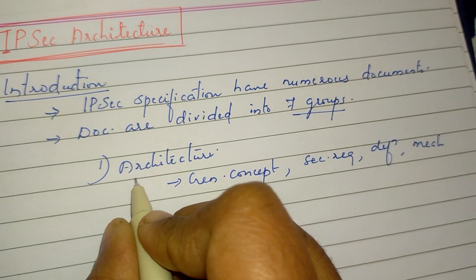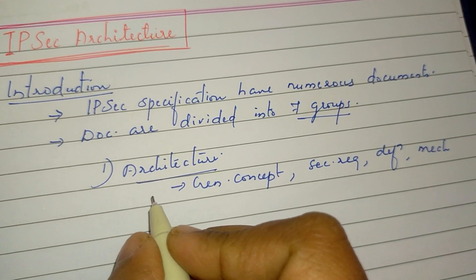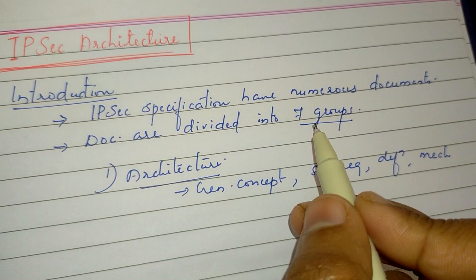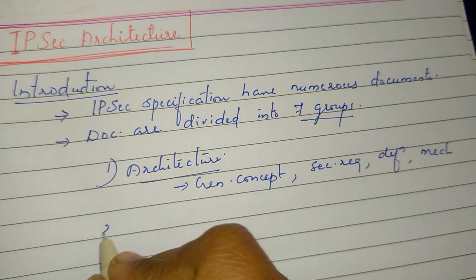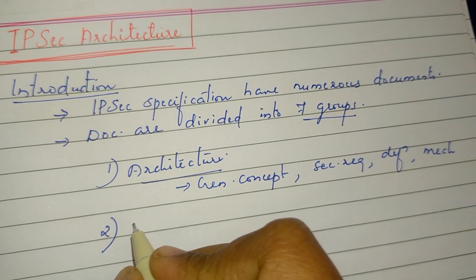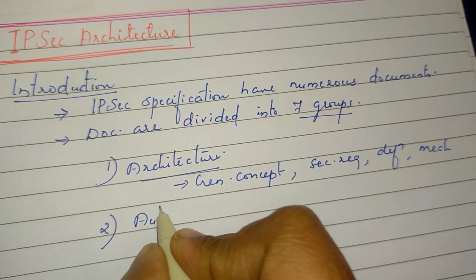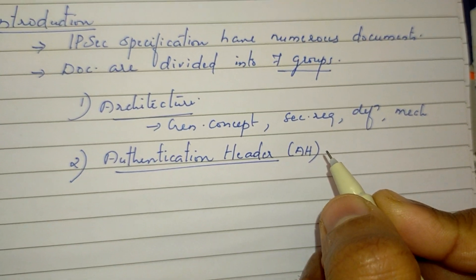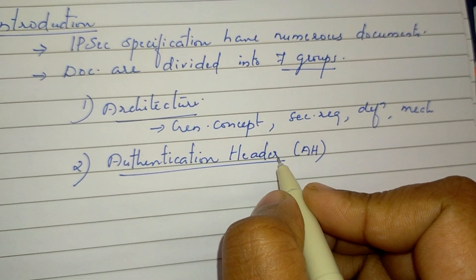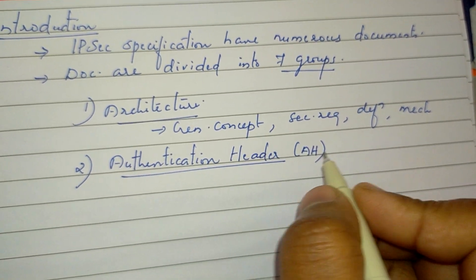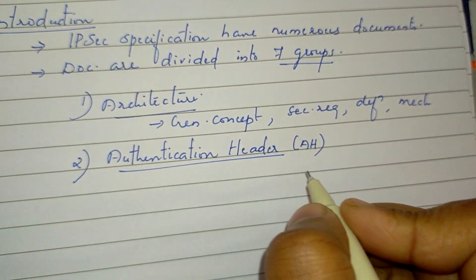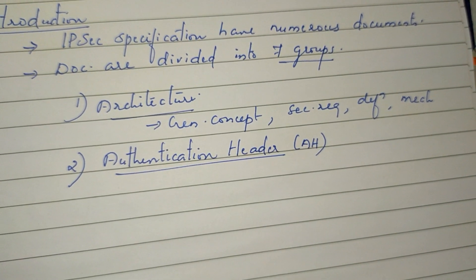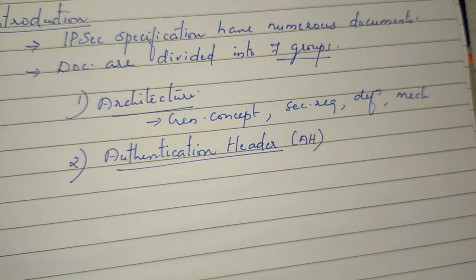This is the architecture group — the first group. The second group is Authentication Header.